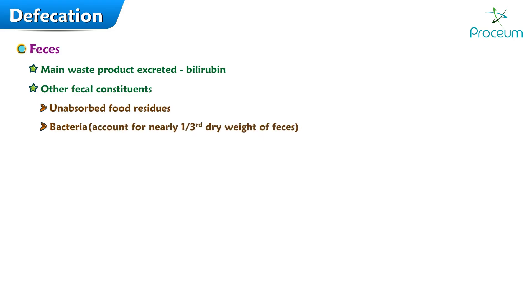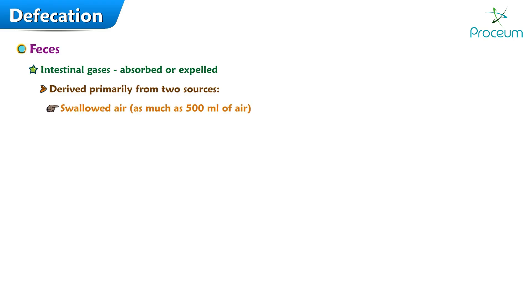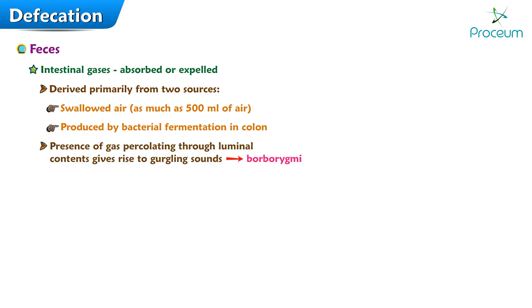Bacteria account for nearly one-third the dry weight of feces. Intestinal gases are either absorbed or expelled. Occasionally, instead of feces passing from the anus, intestinal gas or flatus passes out. This gas is derived primarily from two sources: swallowed air — as much as 500 milliliters of air may be swallowed during a meal — and gas produced by bacterial fermentation in the colon. The presence of gas percolating through luminal contents gives rise to gurgling sounds known as borborygmi.